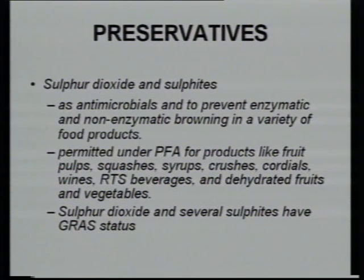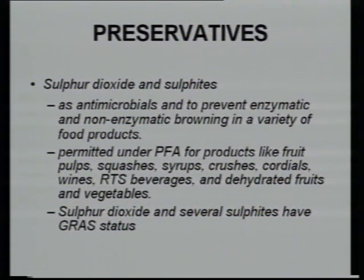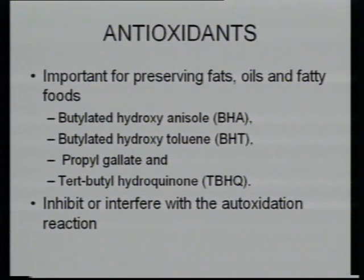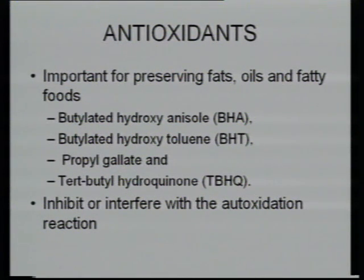Sulfur dioxide and sulfites are also permitted by PFA for food pulps, cordials, beverages, and dehydrated products. They also prevent enzymatic and non-enzymatic browning. Sorbic acid and sorbates are also permitted. The biologically derived antimicrobial nisin is one substance that can also be used. For preserving fats and oils, the antioxidants BHA (butylated hydroxyanisole) and BHT (butylated hydroxytoluene) can be added as per legal requirements. They prevent the auto-oxidation reaction.